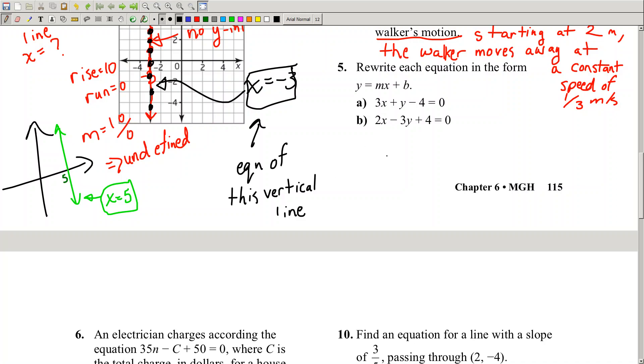Alright, in today's fun and exciting video, what we'll talk about is rewriting an equation in y equals mx plus b form. So this is standard form, and it's because you've got a zero on one side.